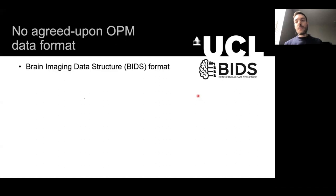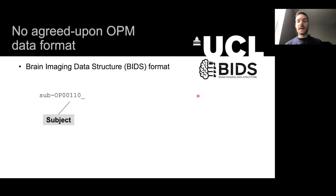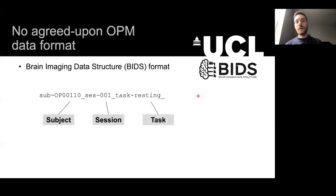At the moment there's no agreed upon OPM data format. For the past few years at UCL we have been using our own customised format which is based on the Brain Imaging Data Structure. Each file contains a subject number — usually in the UCL lab 'OP' followed by a number — the session number, and a brief description of the task that they are doing.